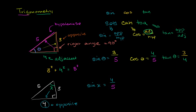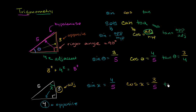Now, cosine of x — that's adjacent over hypotenuse. The side adjacent to x that's not the hypotenuse is the 3 side, so cosine of x equals 3 over 5. And finally, tangent of x — opposite over adjacent. The opposite side is 4 and the adjacent side is 3, so tangent of x equals 4 over 3.